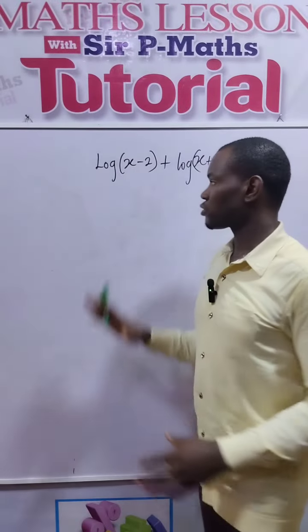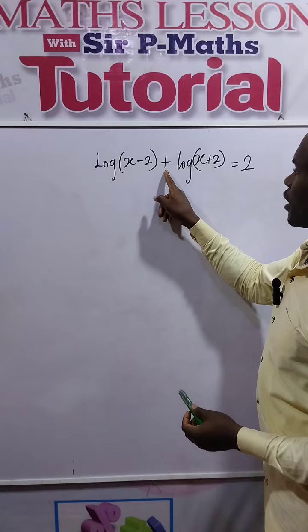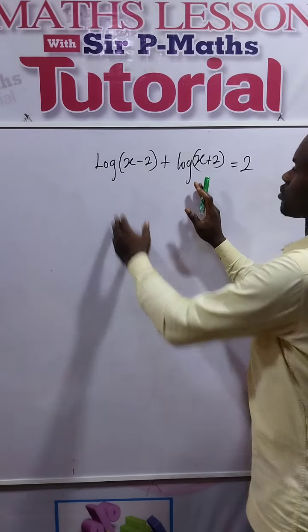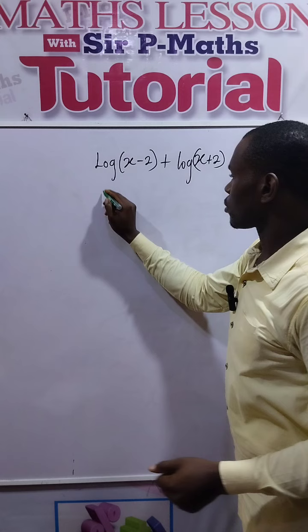All right guys, welcome to my channel. We want to solve this math problem on the board. Now, whenever you have addition of two logarithms, all you need to do is multiply the terms of those logarithms.